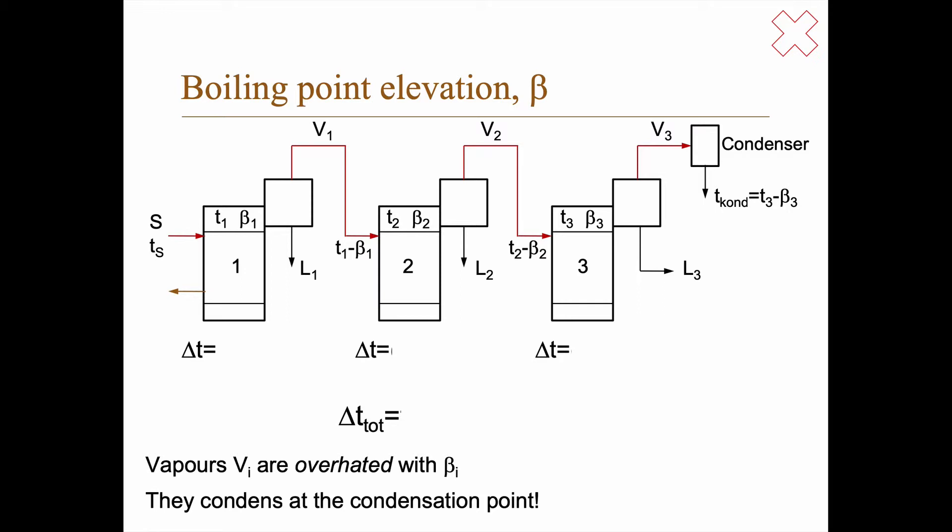So what will then the temperature difference be? Well in the first one it's TS minus T1. So far so good. But then you come to the next one. And here the temperature on the hot side is T1 minus beta 1. And on the other side you have T2. So this is T1 minus β1 minus T2. And in the third the temperature on the hot side is T2 minus beta 2. And the temperature on the other side is T3. And T3 is not the condensation temperature. So the available temperature difference, the available driving force for you is the temperature of the steam minus the temperature of the condenser minus the sum of all these boiling point elevations.